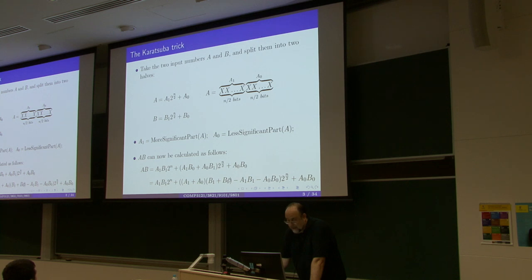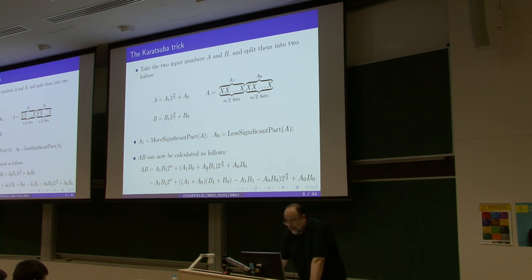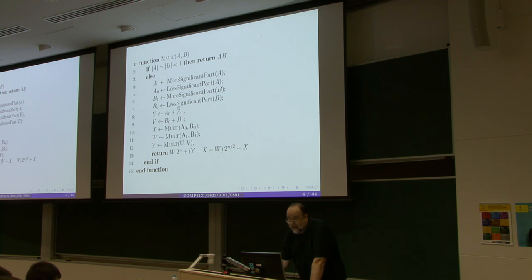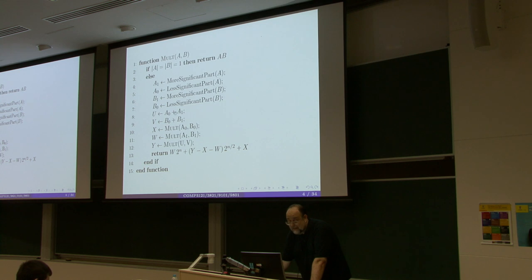We compute this cross-term sum by multiplying the sum (a₁ + a₀) with (b₁ + b₀) and then subtracting the two individual products a₁b₁ and a₀b₀. Because that will exactly give us a₁b₀ + a₀b₁. So this is the recursive divide-and-conquer algorithm: split a and b into more significant and less significant parts, sum them up, multiply, and then compute the final answer by shifting appropriately.